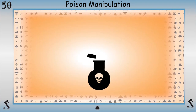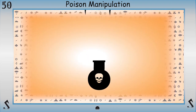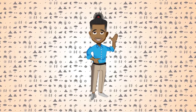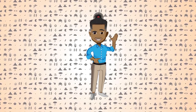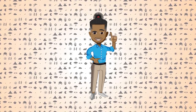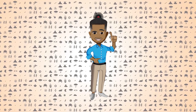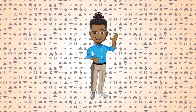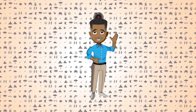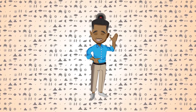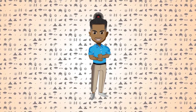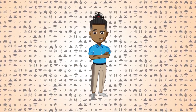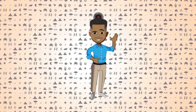Let's get started with Poison Manipulation, a severely notorious while at the same time severely misunderstood power that can and will alienate most from trying to interact with you. Users of Toxikinesis can create, shape, and manipulate various poisons and poisonous substances. That Latin prefix was a little on the nose for me.